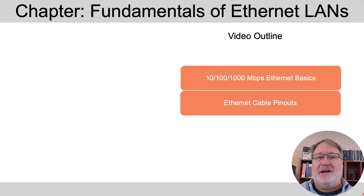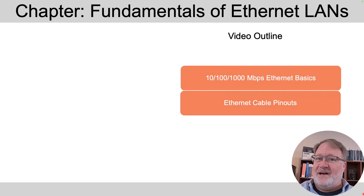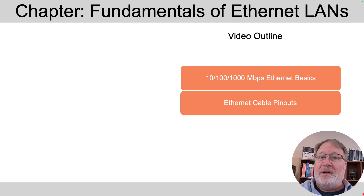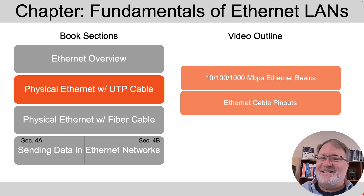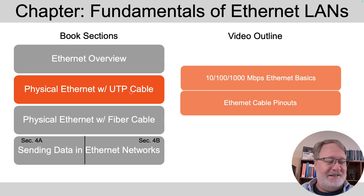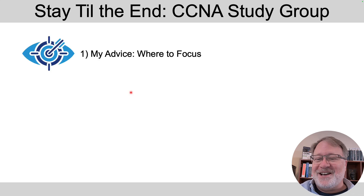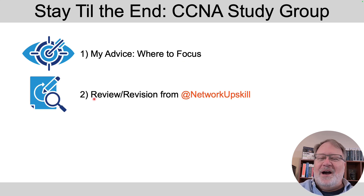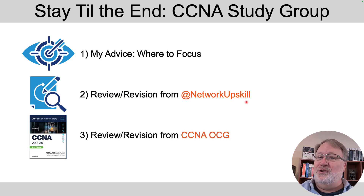The outline for this video is pretty straightforward. I'll talk about 10, 100, and 1000 megabit Ethernet using twisted pair cabling — the basics — and then I'll talk about what we call cable pinouts, that is, where the wires go inside the connectors at the ends of the cable. This topic mirrors the second of four major sections in Chapter 2 of my Volume 1 CCNA Official Cert Guide, covering Physical Ethernet with Unshielded Twisted Pair Cabling. Stick around to the end of the video and I'll give you advice on where to focus your study.